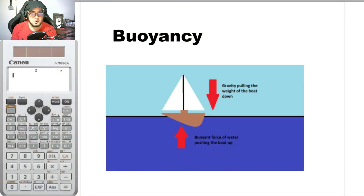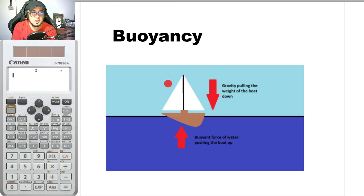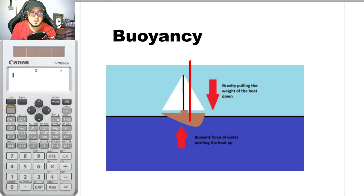Hello and good day again everybody, welcome again to Hydraulics. For today's video lecture we will be discussing buoyancy. Buoyancy is the main reason why things float on water. Suppose we have a boat here — all objects on earth are subject to gravity, so they have a weight directed vertically downwards. The reason why a boat is floating is because of the buoyant force.